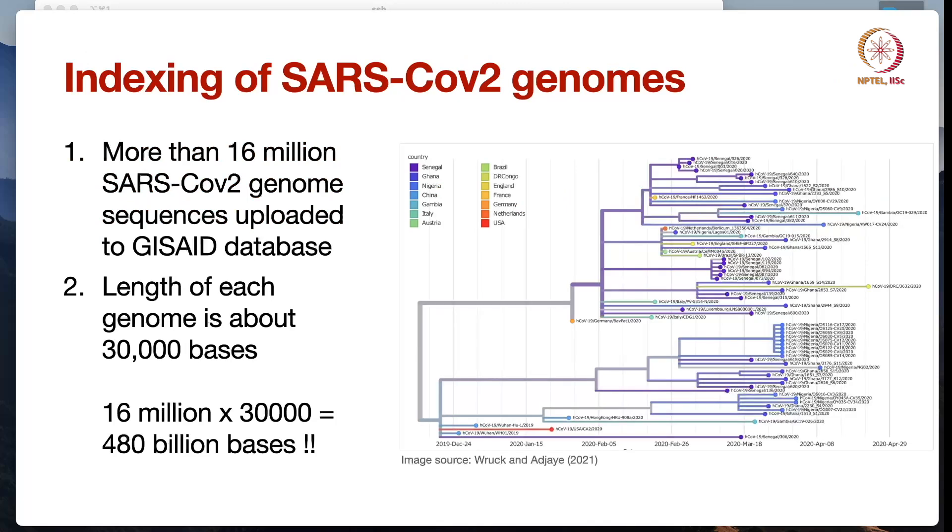As part of the pandemic, more than 16 million SARS-CoV-2 genome sequences have been uploaded to public databases. And if you consider the length of each SARS-CoV-2 genome, it is about 30,000 bases.